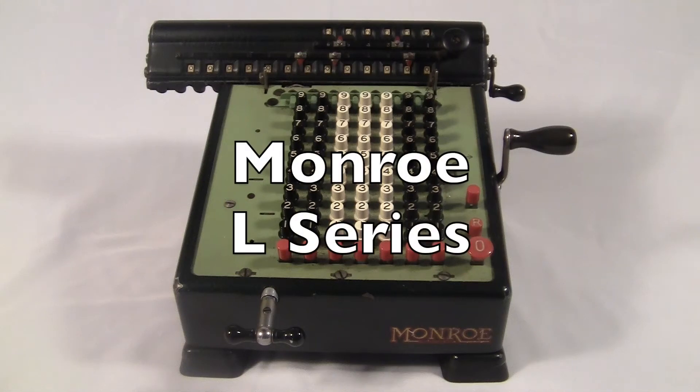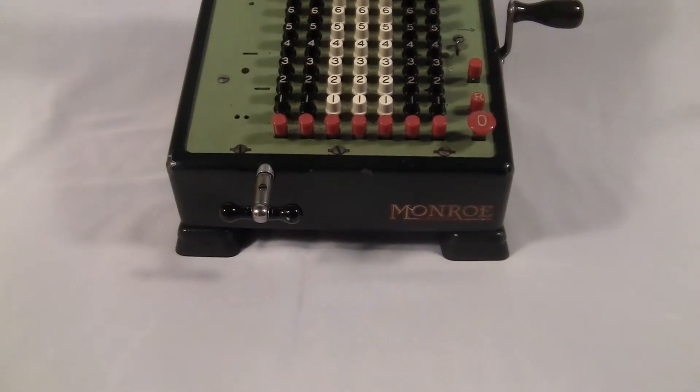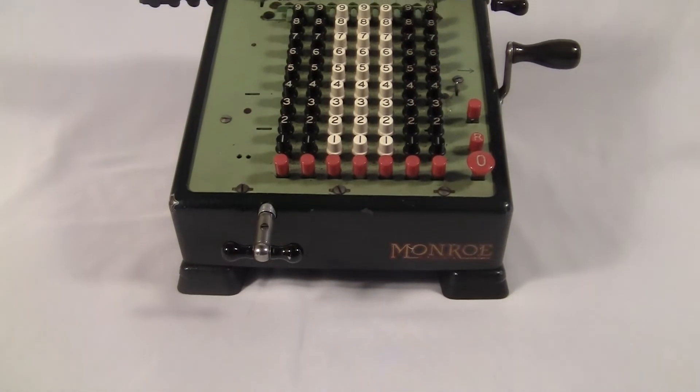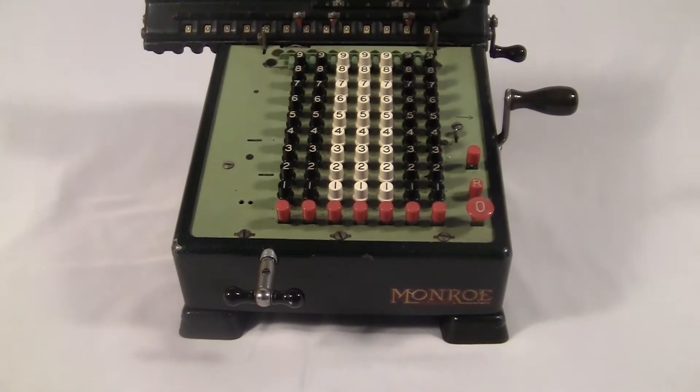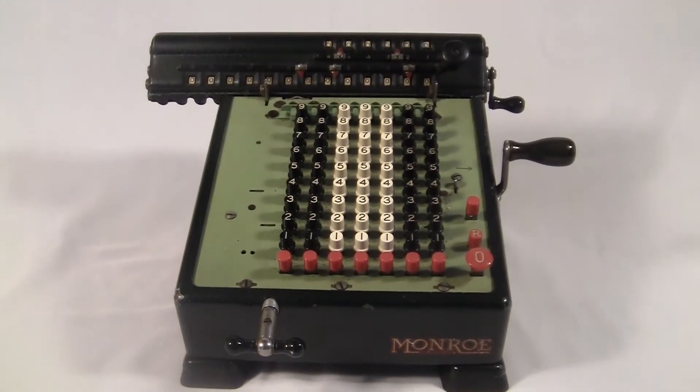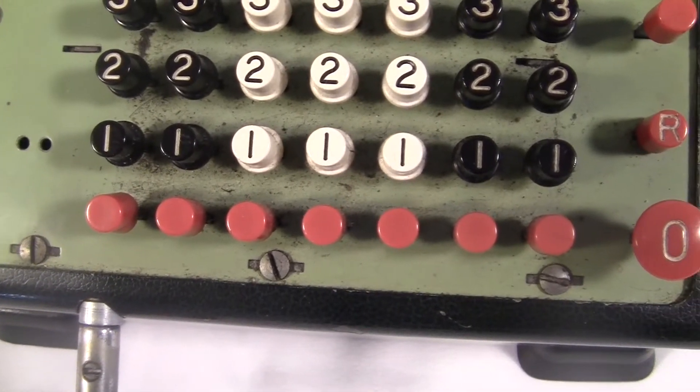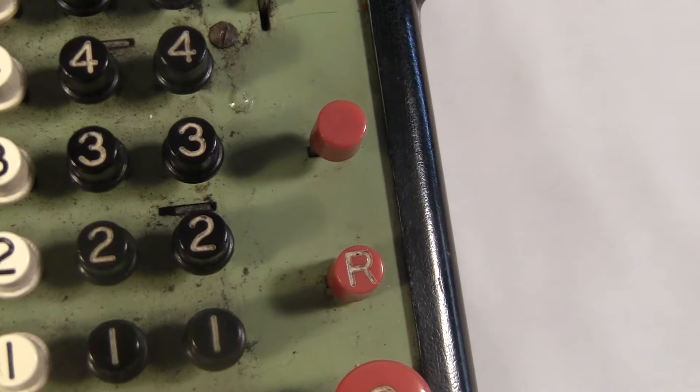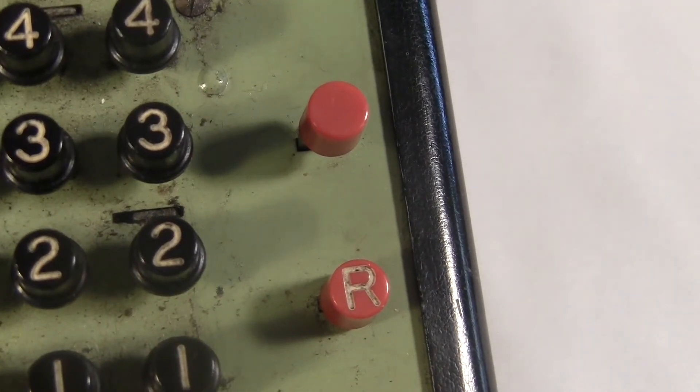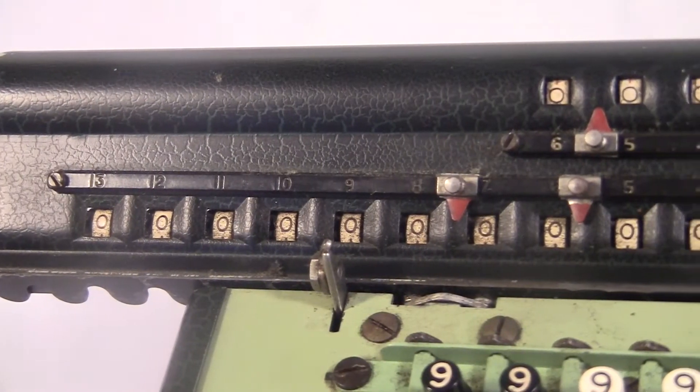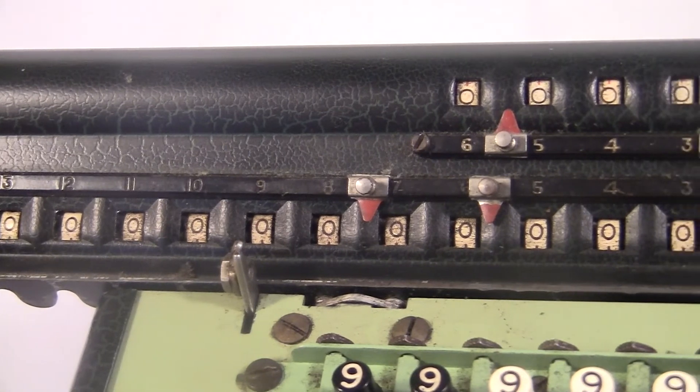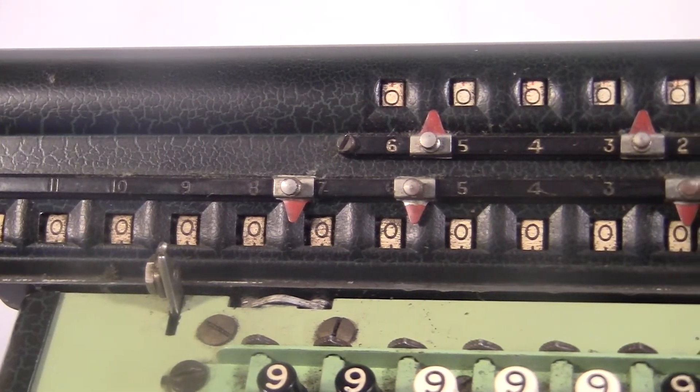This is a Monroe L-Series adding machine, I think from the 1940s. It has seven columns of digits, tons of knobs and buttons. Each digit column has its own clear button at the bottom. There's a big one on the right to clear the whole machine. These two red buttons control the repeat function. There's two separate displays at the top, and you would not believe the cranks on this thing.